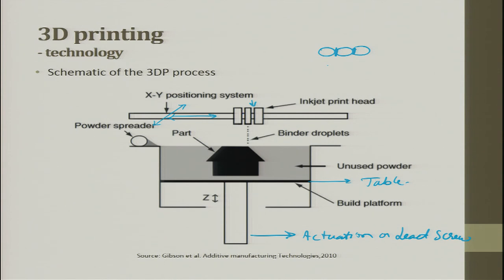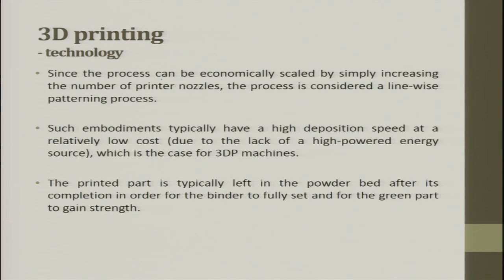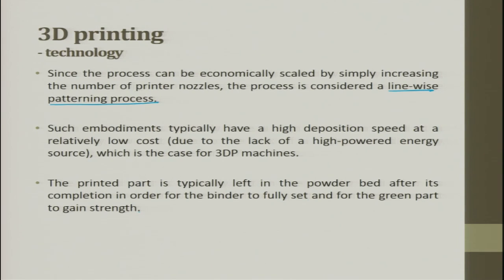After this, you can use this as a pattern for making a mold to a component. Since the process can be economically scaled by simply increasing the number of print nozzles, the process is considered a line-wise patterning process. Such embodiments typically have a high deposition speed at relatively low cost, because the technology is already known. The printed part is typically left in the powder bed after completion for the binder to fully set and for the green part to gain strength.